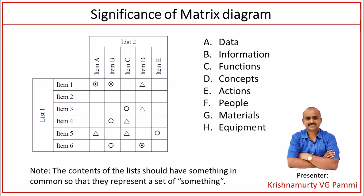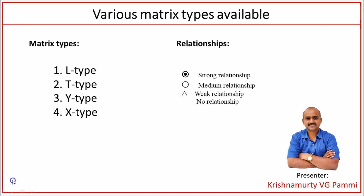For different data items, information items, functions, actions, materials, and equipment — the moment you know what is strongly correlated, what is mediumly correlated, where weak correlation exists, and where there is no relationship — this compact way of analysis gives a beautiful message. This is possible because of the matrix diagram.